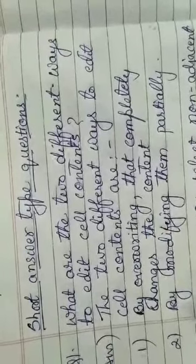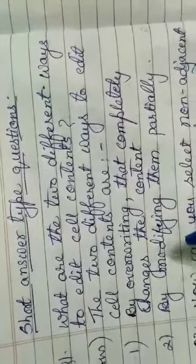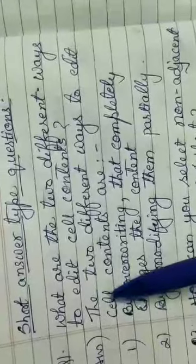Question number 1: What are the two different ways to edit cell contents? There are two ways in which we can edit cell content. First one is by overwriting and second one is by modifying. By overwriting we can completely change the content and by modifying we can change few characters of the content. So the answer is: The two